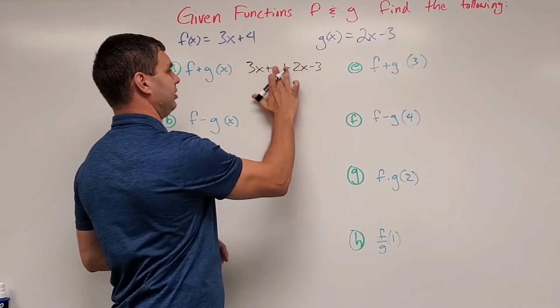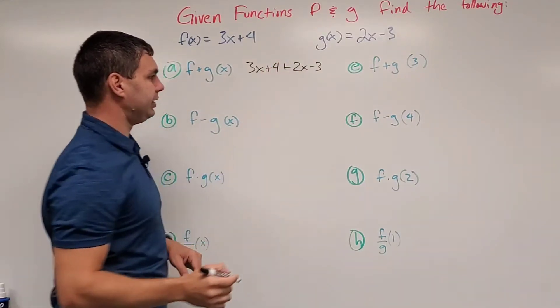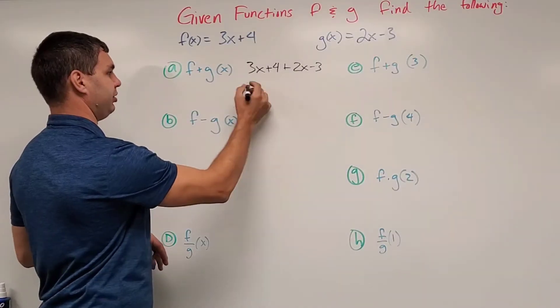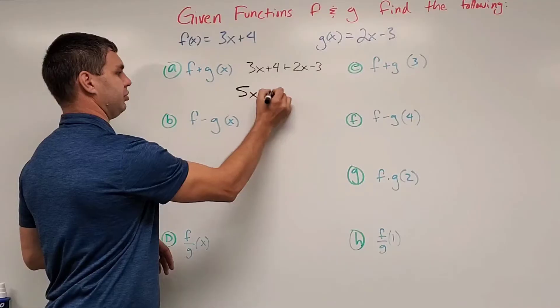Okay, 2x minus 3. And what I get here is just combined like terms, I get 5x plus 1. Okay, 5x plus 1.